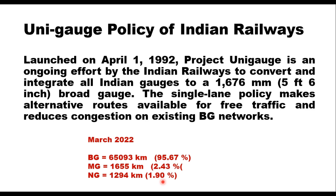The task of converting meter gauge to broad gauge is continuing. However, lines that will not be converted are the heritage lines. For example, the Nilgiri Mountain Railway in Tamil Nadu, which is a 46-kilometer track, will not be converted to broad gauge. Similarly, Kalka-Shimla narrow gauge line (94 km), Kangra Valley Railway (164 km), Darjeeling Himalayan Railway in West Bengal, and Matheran Hill Railway in Maharashtra — all on narrow gauge — will not be converted as they have been declared heritage lines.